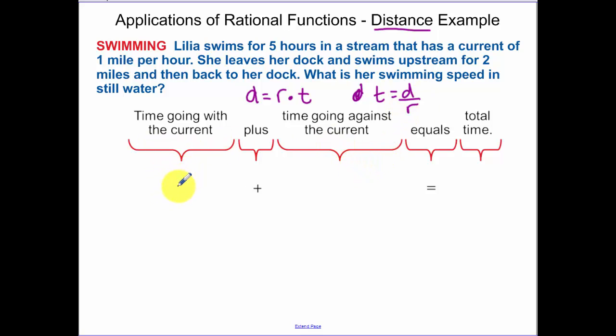Her time going with the current - remember when you're going with the current, the current's helping you along. So her total distance is two miles. Her rate is r minus one, because the stream is helping you along, so it's taking away from your rate. Time against the current is the rate she's swimming plus one, and that equals our total time of five hours.